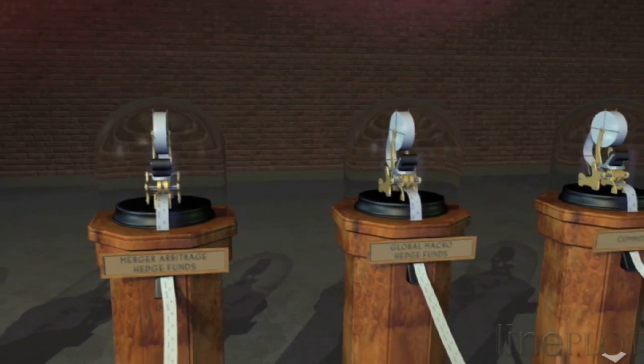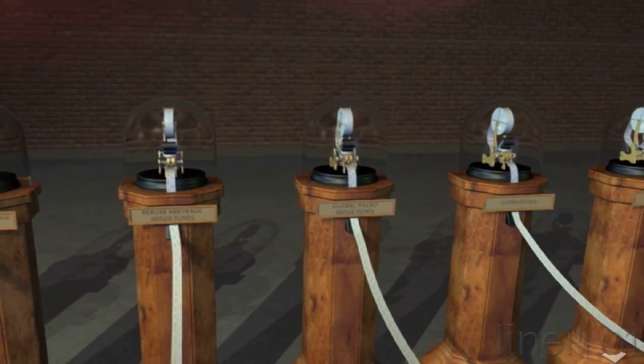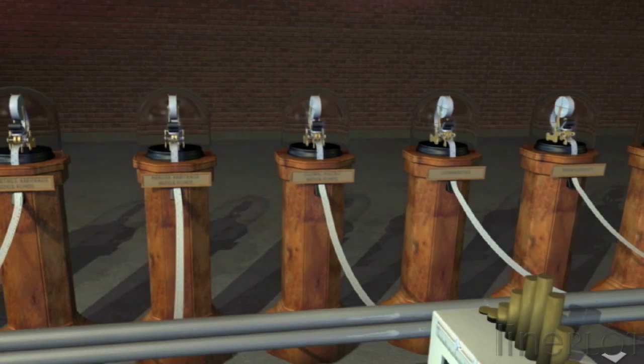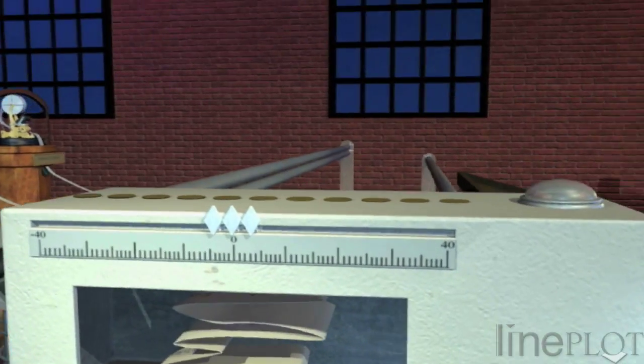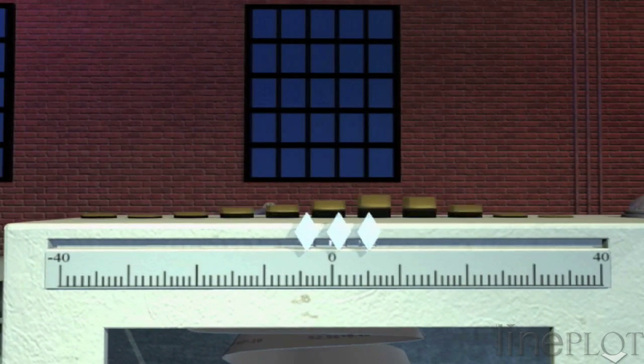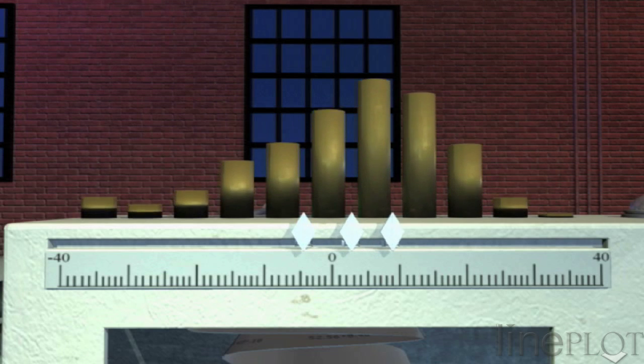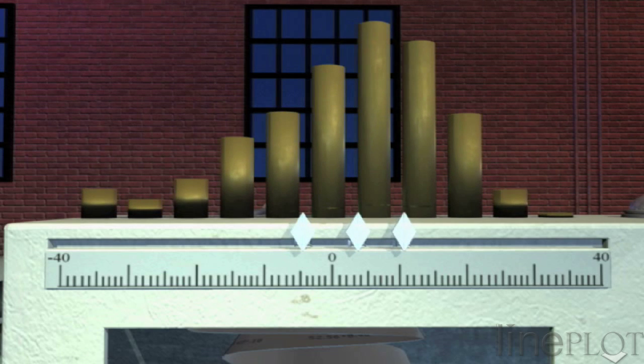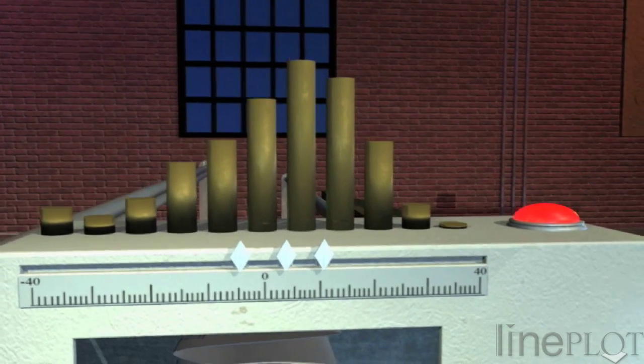Unlike traditional stocks and bonds, these assets do not always produce normally distributed returns. Many hedge funds, for example, produce distributions that are negatively skewed rather than symmetrical, and a greater fraction of their returns lie at the extremes of the distributions rather than near the center.